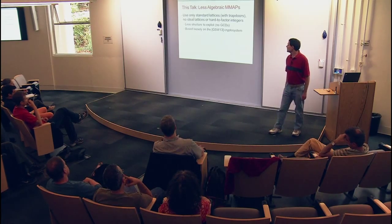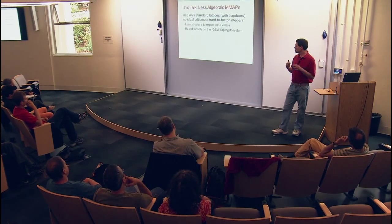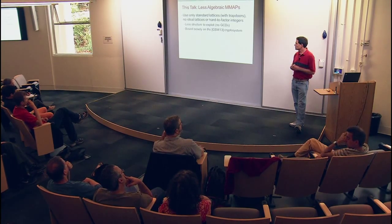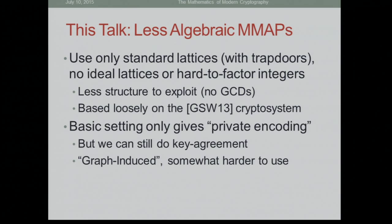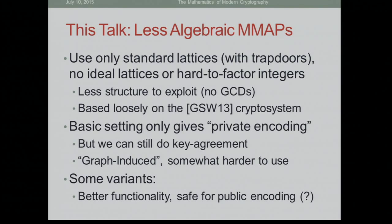What I'm going to talk about in this talk is a less algebraic construction. It only uses standard lattices and trapdoors — no ideal lattices in the basic scheme, and no factoring of integers. There seem to be less structure to exploit, and no obvious GCDs that you can compute. It's based very loosely on a different homomorphic encryption scheme, the one due to Gentry, Sahai, and Waters. In the basic settings, you still only get private encoding, but you can still do key agreement that we don't know how to break. It's graph-induced, and I'll say what that means in the next slide.